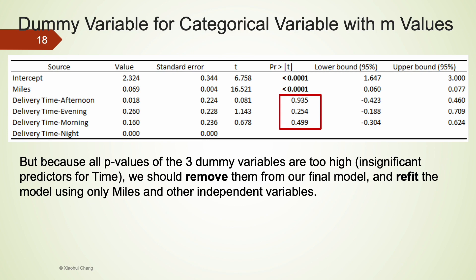One thing to point out is that all p-values of those three dummy variables are at least 25 percent, very high. This suggests that the delivery time variables are not statistically significant predictors of time. Therefore, we should remove them from our final model. I would recommend refitting the data using only miles and testing out other independent variables in the dataset.